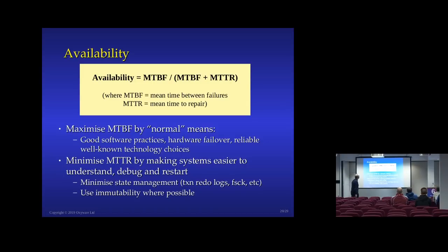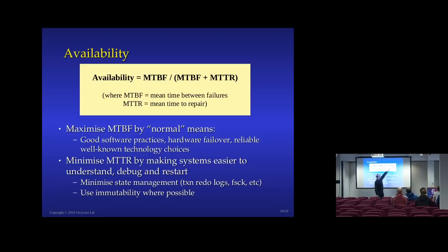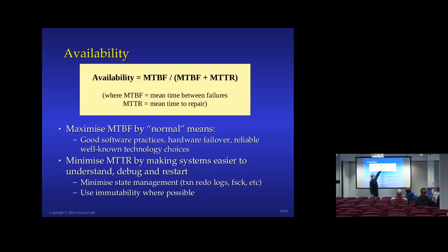Last couple of slides. Have you ever thought about availability? Availability is mean time between failure divided by mean time between failure plus mean time to recover. So: how often does it break, and how long does it take to get it going again? Having load balancers and redundancy is great for MTBF, and we're used to dealing with that. But what about mean time to repair? As MTBF goes up, mean time to repair becomes the dominant factor. How quickly can I get running again? It's not just how often it breaks, but how long it takes to work out what's happening.